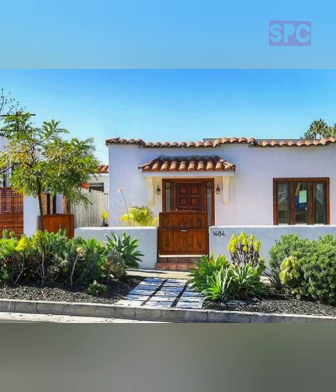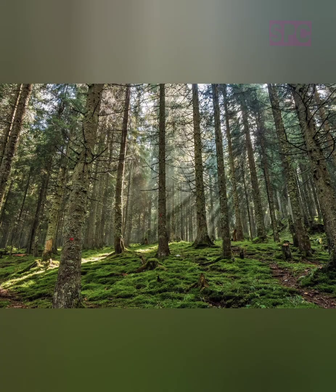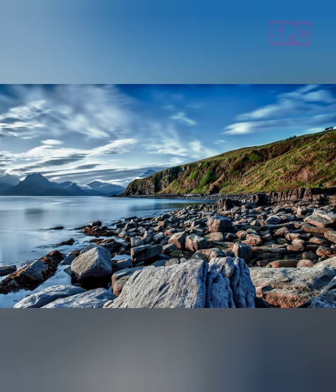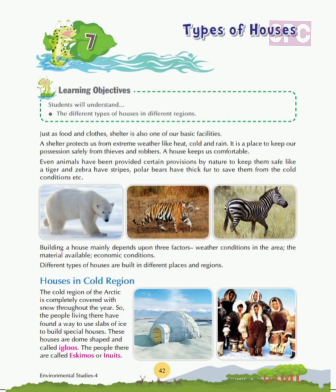The houses which are built in these regions depend on these climatic conditions and the resources which are available in those regions. So children, today we are going to read and understand chapter 7, Types of Houses. In this chapter, we will learn about different types of houses which are built in different regions. Let's start.